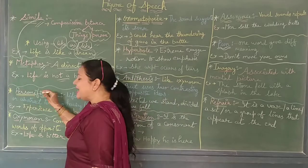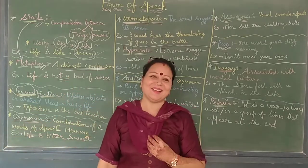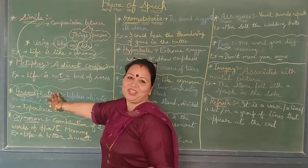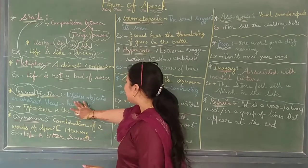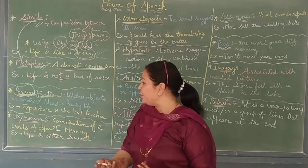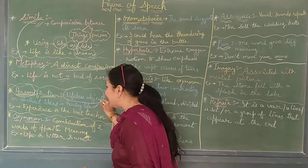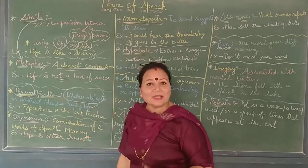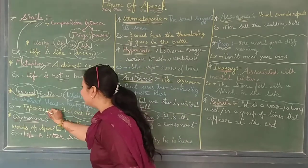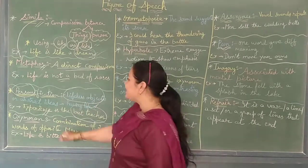Now let's move to the third figure of speech: personification. The word personification is related to 'person.' When any non-living thing, lifeless object, or abstract idea — such as a feeling or a concept — is given the qualities of a living being, that is called personification. For example: 'Experience is the best teacher.' Here, experience is an abstract thing being compared to a teacher.